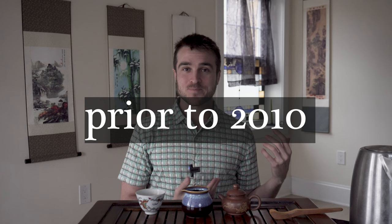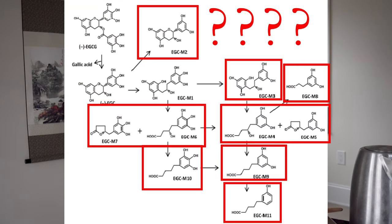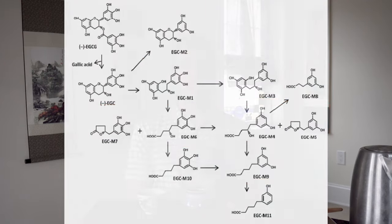We don't have whole EGCG molecules crossing the intestinal barrier often, but we do have a lot of these metabolites — these breakdown products of EGCG — crossing the intestinal barrier and accumulating in the bloodstream at levels relevant to affecting human health. When you account for these metabolites, the bioavailability of EGCG and tea catechins increased tenfold — 10x the amount of tea catechins in the bloodstream than we used to think.